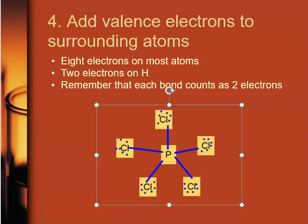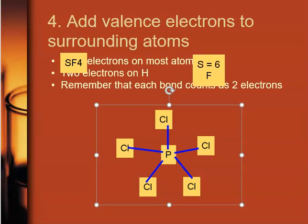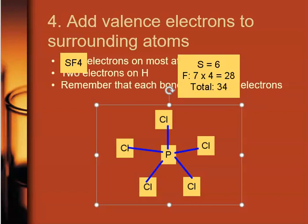Another example that I'd like to show you is SF4. We're going to follow exactly the same process. We're going to start off with our number of valence electrons. Sulfur has six valence electrons, fluorine has seven valence electrons, but there are four fluorines, which means that's going to provide me with a total of 28 electrons. Add those together and I've got 34 valence electrons that are going to make up my diagram.